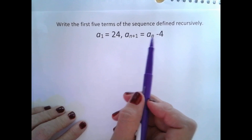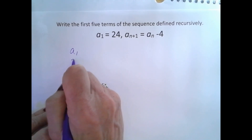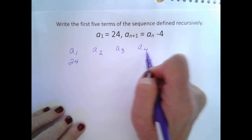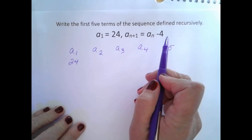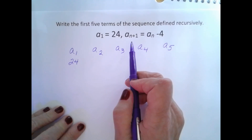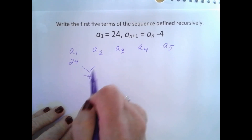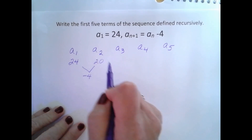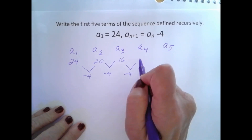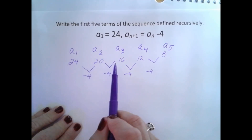Write the first five terms of the sequence defined recursively. a sub 1 is equal to 24 — we have our first term. We want to find the other four terms: a sub 2, a sub 3, a sub 4, and a sub 5. We have a recursive formula here of a sub n minus 4, which gives me the next term. So 24 minus 4 gives me 20; 20 minus 4 gives me 16; 16 minus 4 gives me 12; and 12 minus 4 gives me 8. These are the first five terms of this sequence.